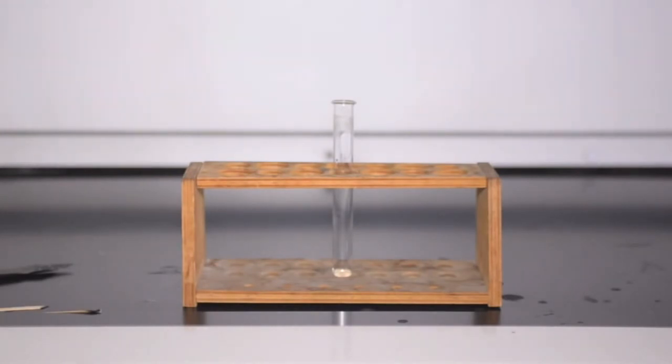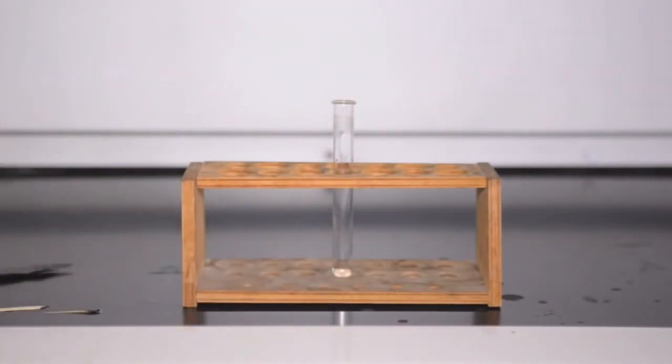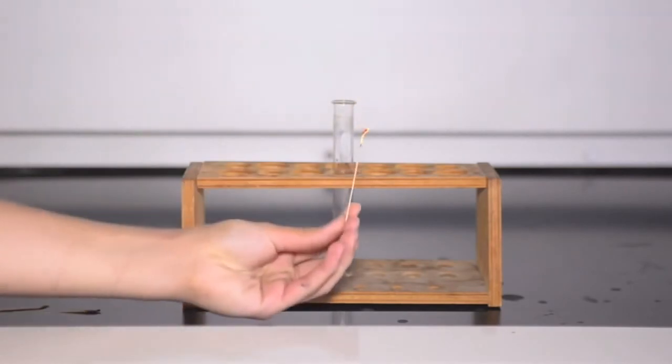By simply lighting the splint on fire, you've created a burning splint. If you blow out the fire, you'll notice that the splint glows red, and that is a glowing splint.